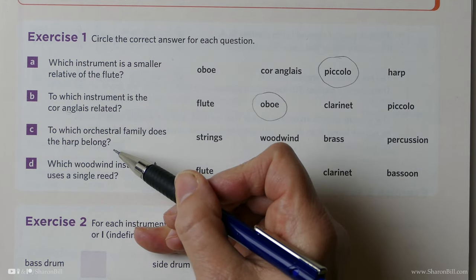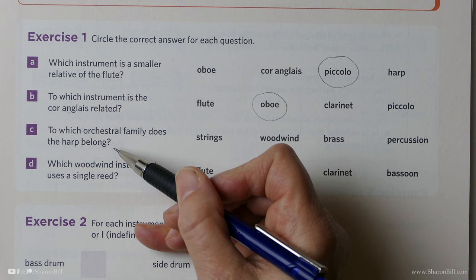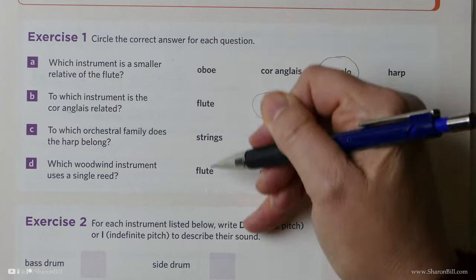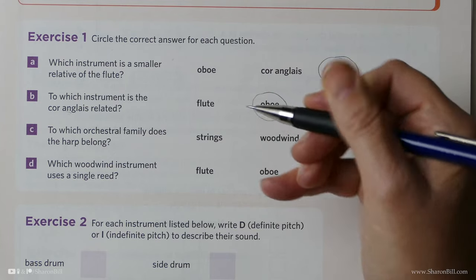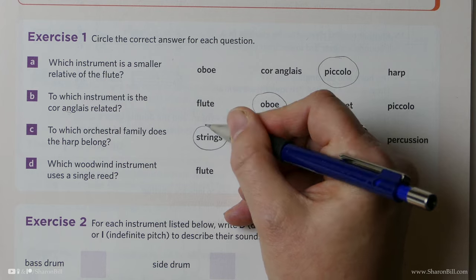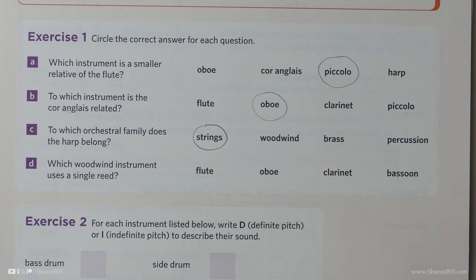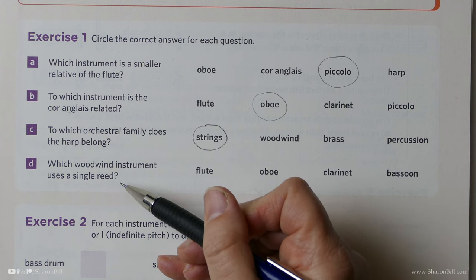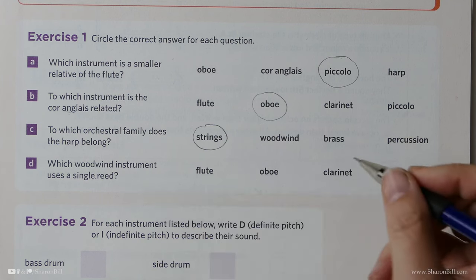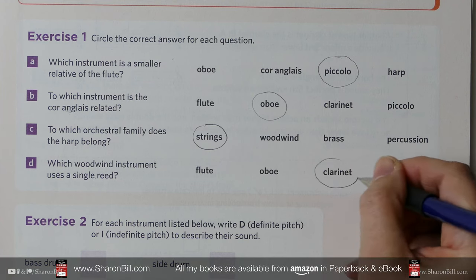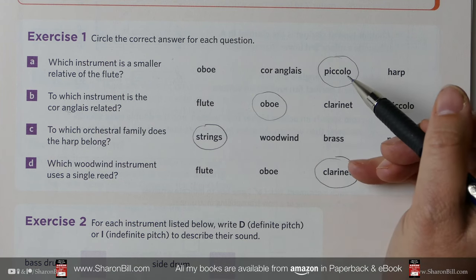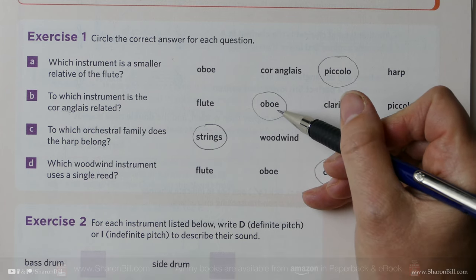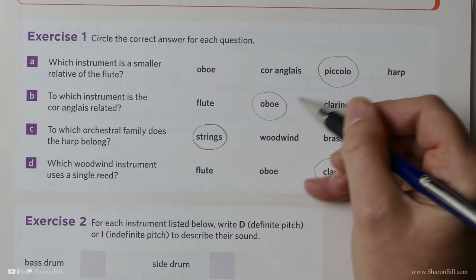To which orchestral family does the harp belong? Well, if you picture the harp, you can see that there are lots and lots of downward strings that are plucked, and so it's obviously a string instrument. And then we're asked, which woodwind instrument uses a single reed? We've seen that at the top of the page, and that's the clarinet.